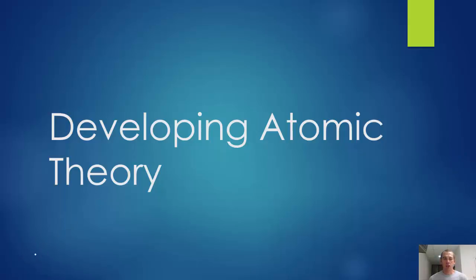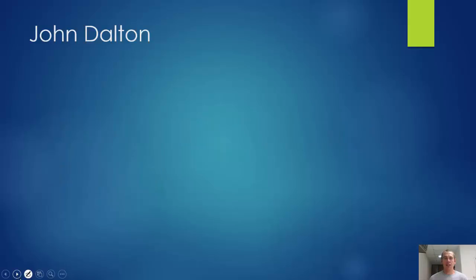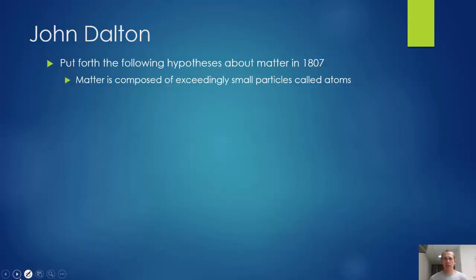So let's get started with John Dalton. He did his work in the early 1800s and it didn't change for a couple hundred years. He put forth the following hypotheses about atoms and matter in general. First, matter is composed of exceedingly small particles called atoms. An actual chunk of this material contains just an inconceivably huge amount of atoms. Not only are atoms there, but they're really, really small.